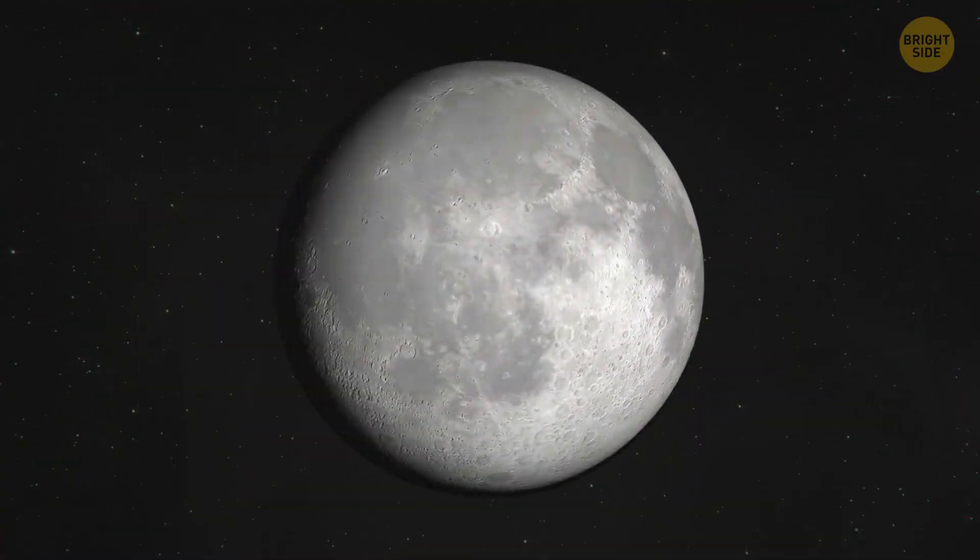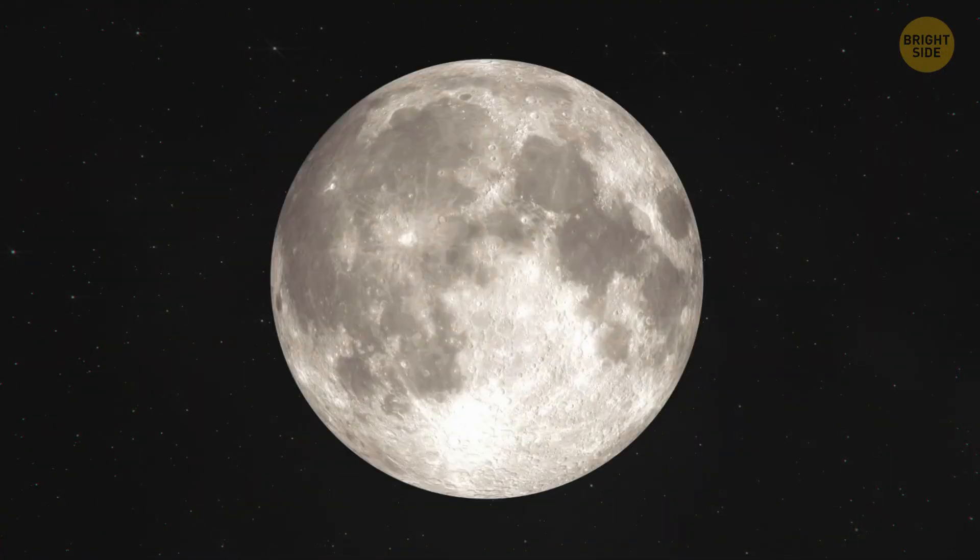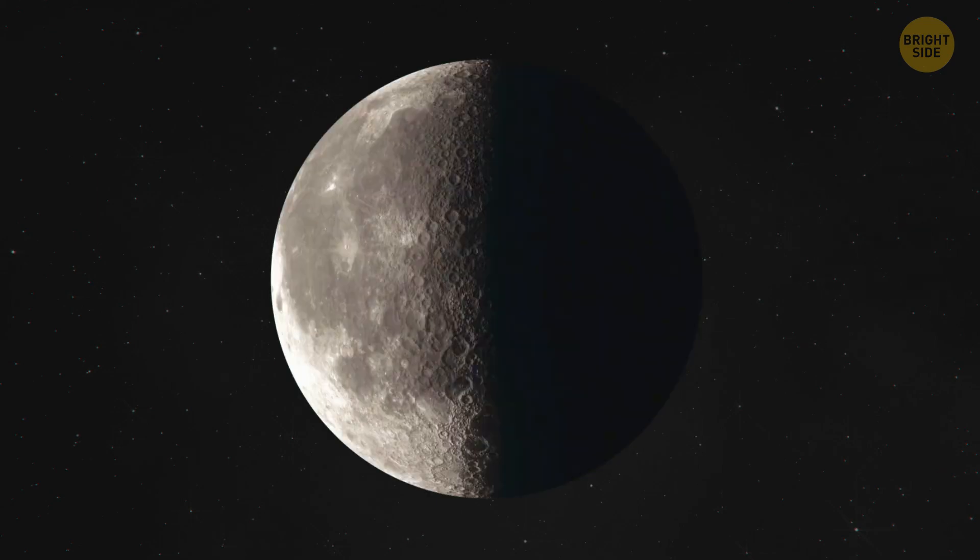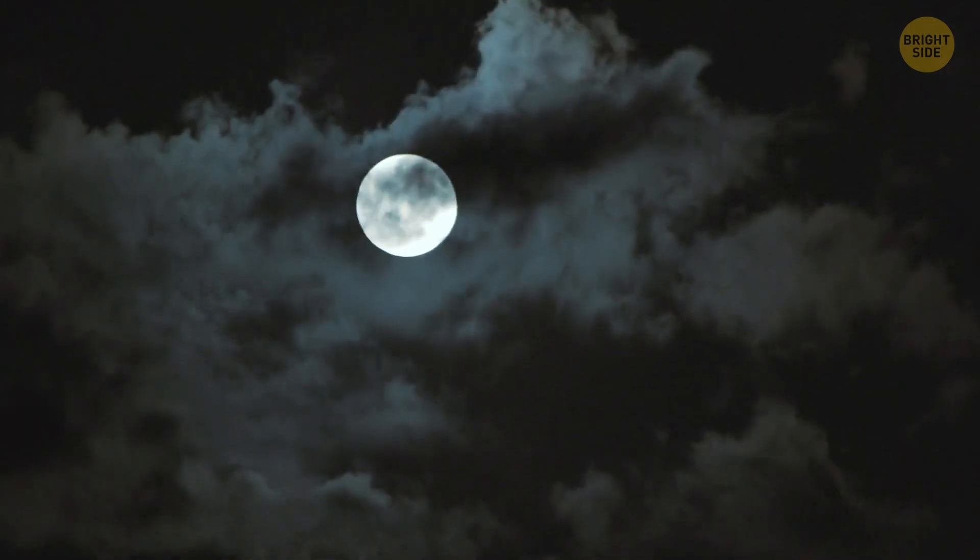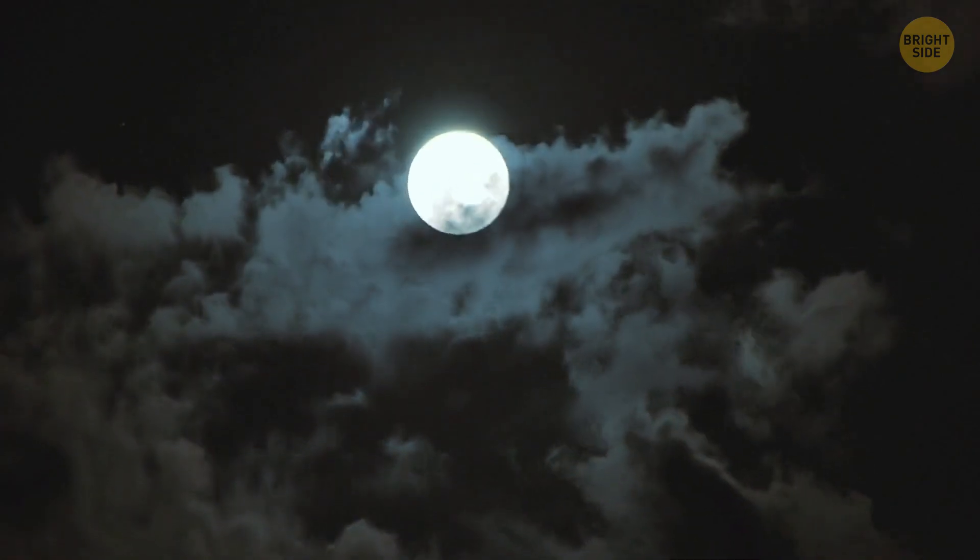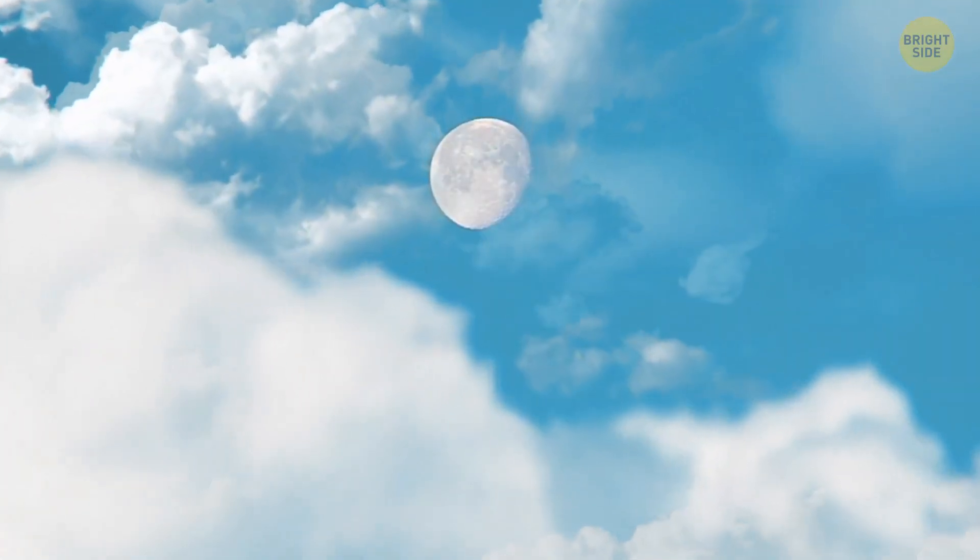The Moon has several phases. For example, new, full, or crescent Moon, first and last quarter. But whatever the satellite looks like, you can always find it in the night sky and sometimes even during the day.